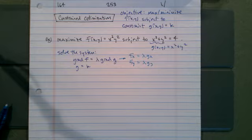So as an example, let's suppose that we want to maximize x squared y squared subject to x squared plus y squared equals 4.